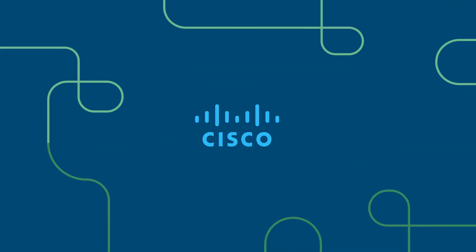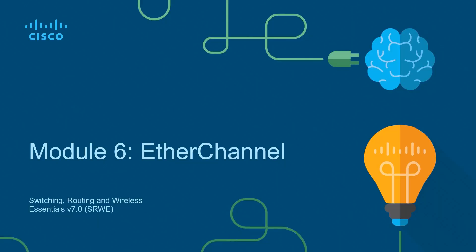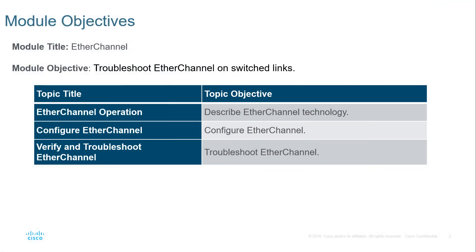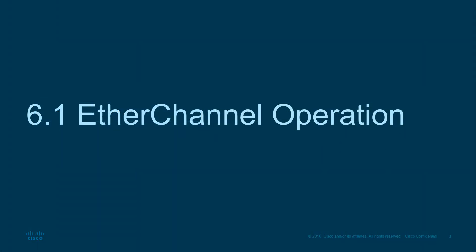Welcome to my Switching, Routing, and Wireless Essentials course — the CCNA version 7 curriculum, second of three courses. Welcome to Module 6: EtherChannel. Here we're going to be looking at EtherChannel operations, how to configure EtherChannel, and then verifying and troubleshooting. Let's go ahead and jump right in.